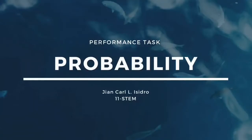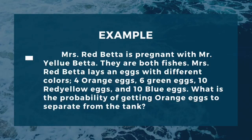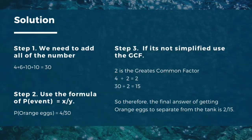Hey everyone, my name is Giancar Alessidro from 11 STEM, and this is my performance task. Probability is the extent to which an event is likely to occur, measured by the ratio of the favorable cases to the whole number of cases possible. Example: Mrs. Red Beta is pregnant with Mr. Yellow Beta — they are both fish. Mrs. Red Beta lays eggs of different colors: 4 orange, 6 green, 10 red-yellow, and 10 blue eggs. What is the probability of getting orange eggs to separate from the tank?